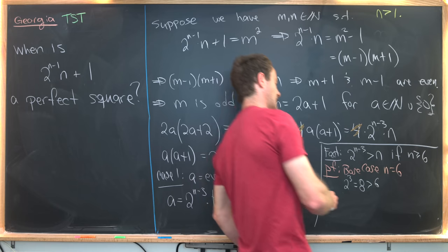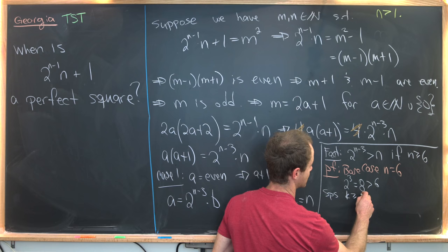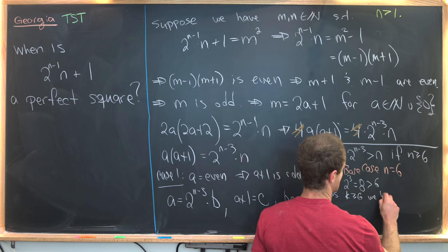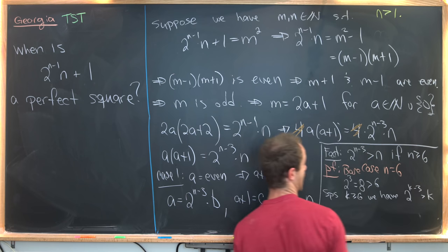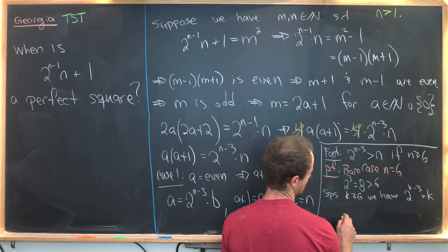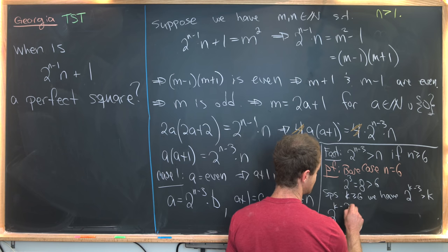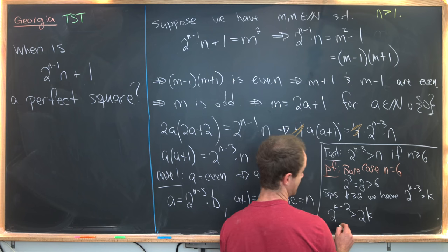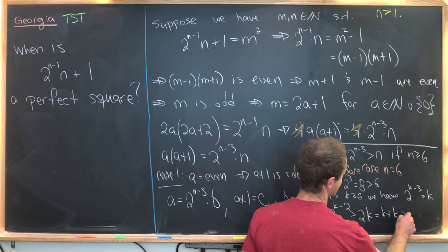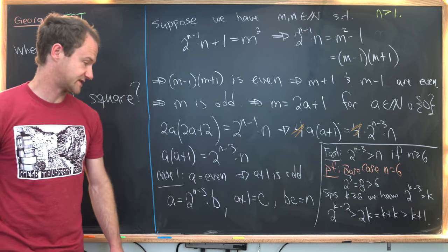Now let's make an induction hypothesis. So let's suppose for k bigger than or equal to 6, we have 2^(k-3) is bigger than k. Now let's multiply both sides by 2. So what do we get if we do that? We'll have 2^(k-2) is bigger than 2k, but that's equal to k + k, but that's clearly bigger than k + 1. So that finishes off this induction step.